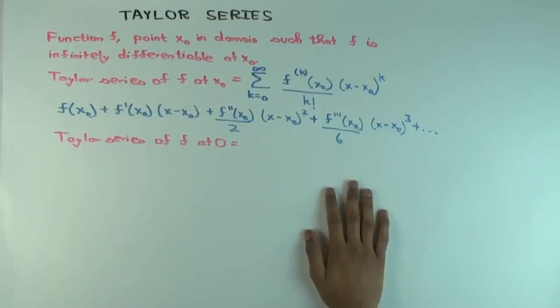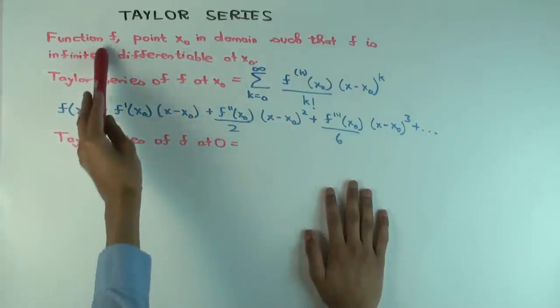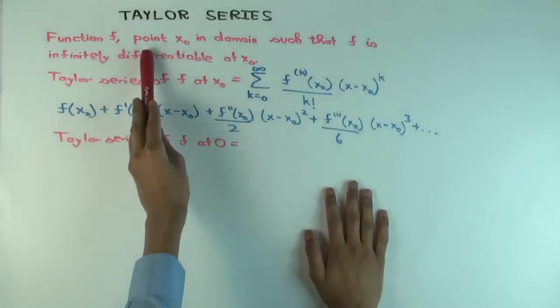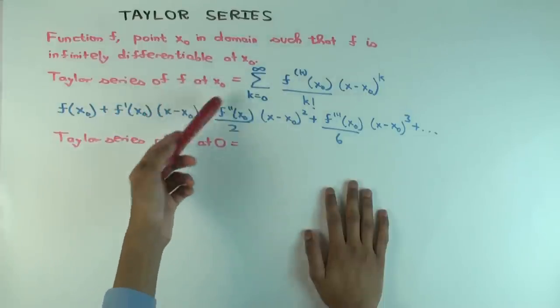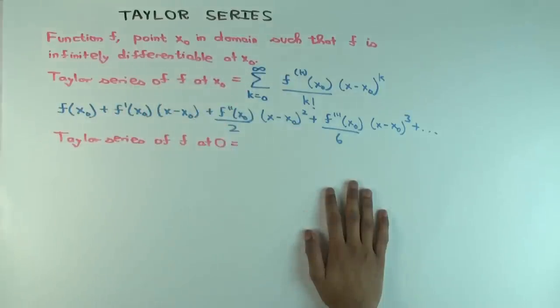Okay, so in this talk we are going to introduce the concept of Taylor series for a function at a point in the domain. So f is a function, x0 is a point in the domain, and f is infinitely differentiable at x0. That means that any derivative of f you want to take, the value of that exists at x0.